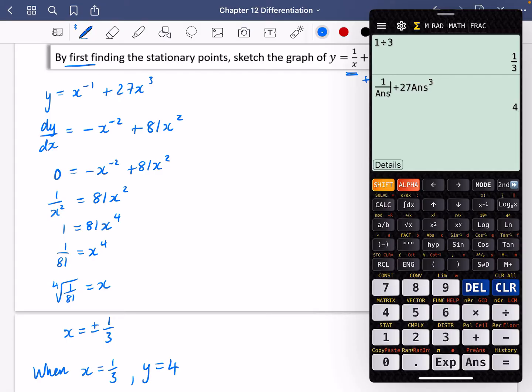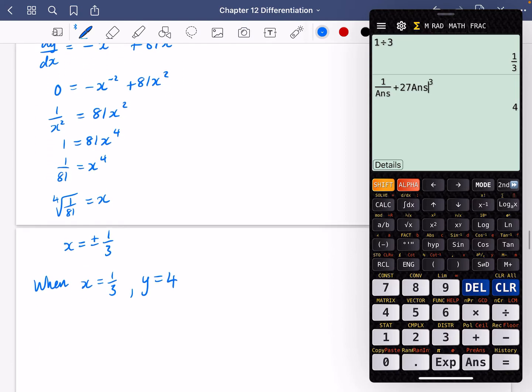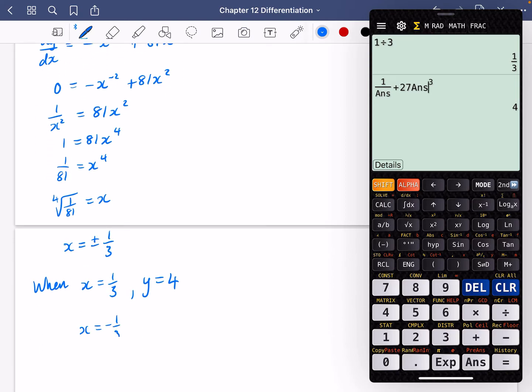Now, I'm going to replace that answer now with the other one, which is when x is equal to minus a third. So I'm just going to go back through and type that in really carefully. So minus a third, that's my answer. And I'm going to do 1 divided by the answer plus 27 answer cubed. And you get minus four.